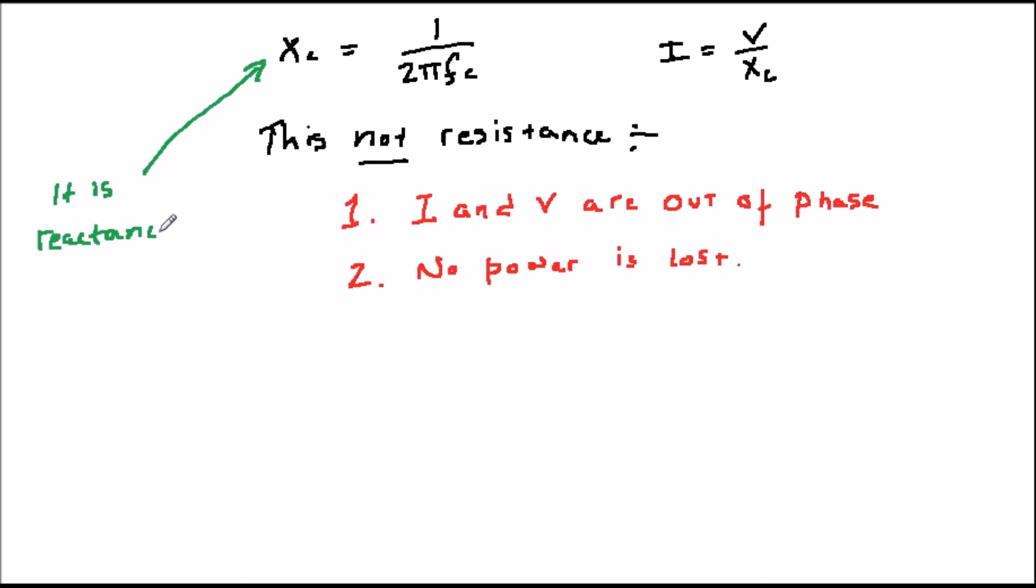However, in other respects, it does parallel resistance, for example, because the current is equal to V over X, in the same way as current in a resistor is V over R. However, the really important point is, for the reasons we discussed earlier, reactance decreases with frequency.